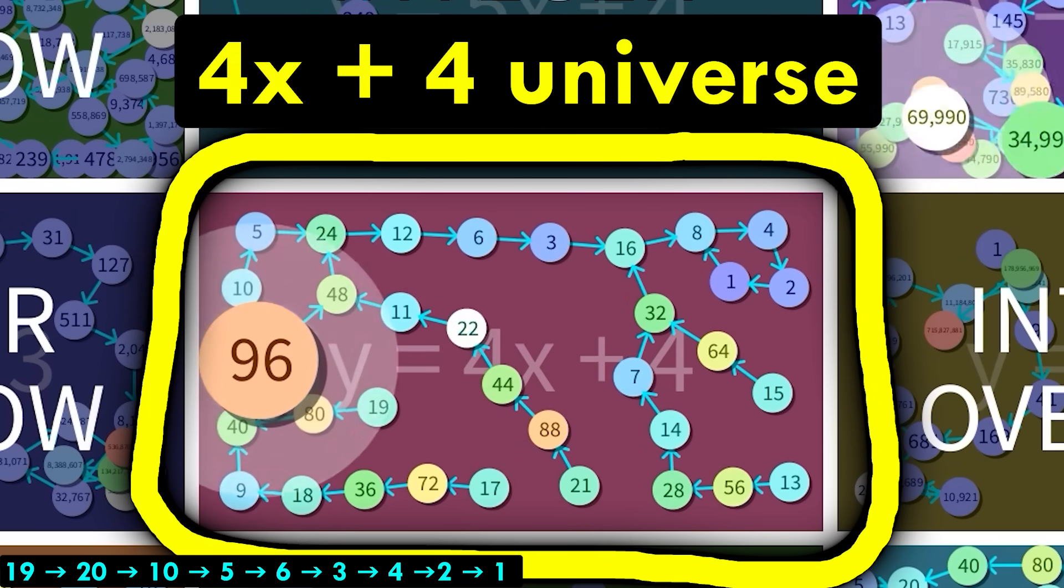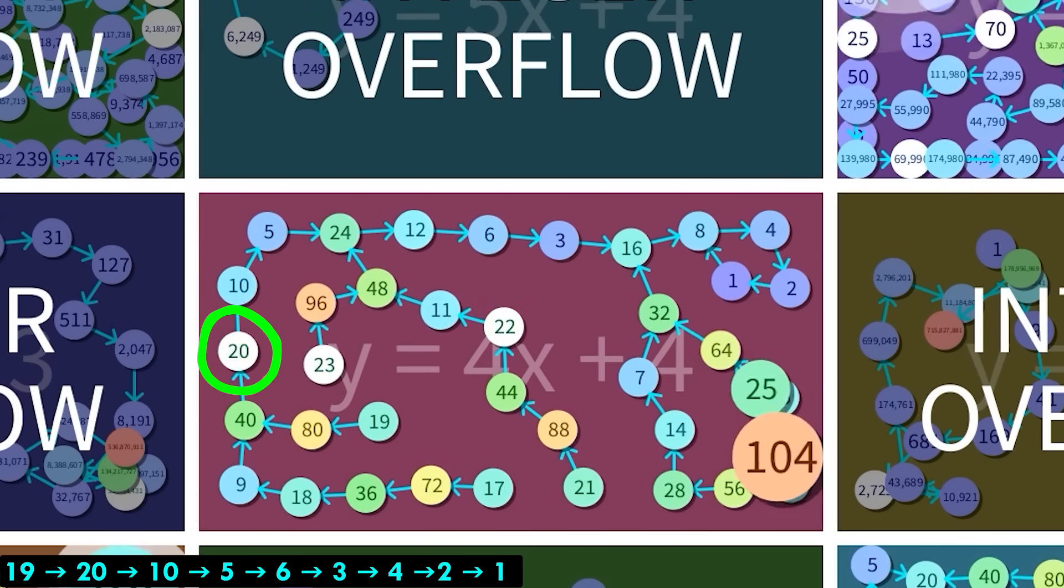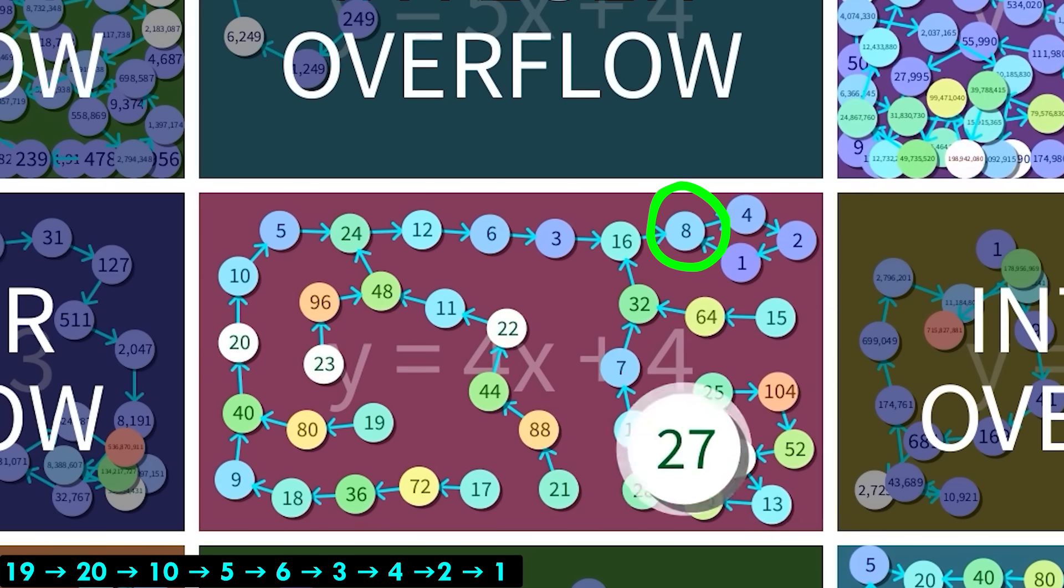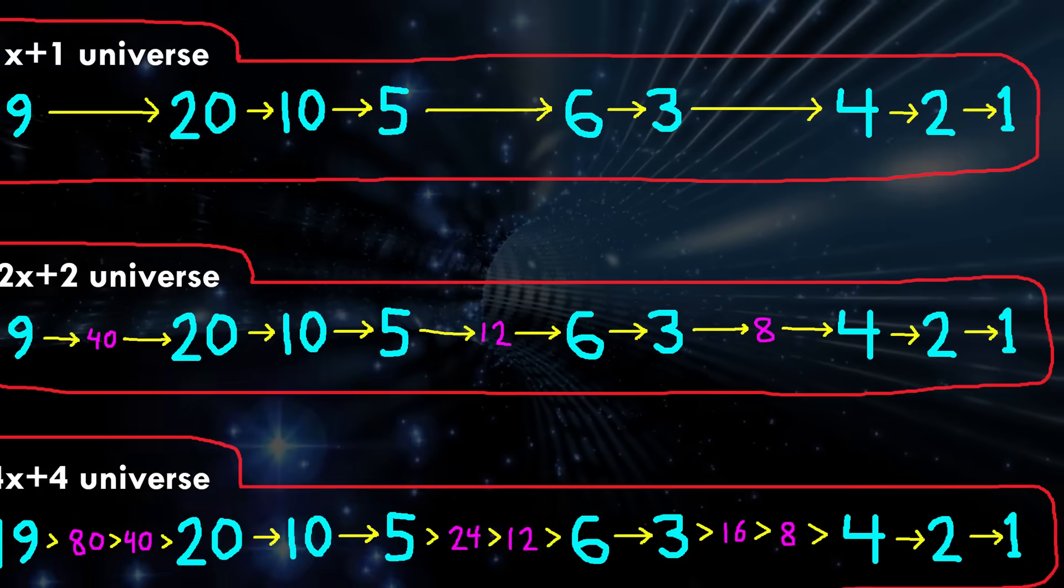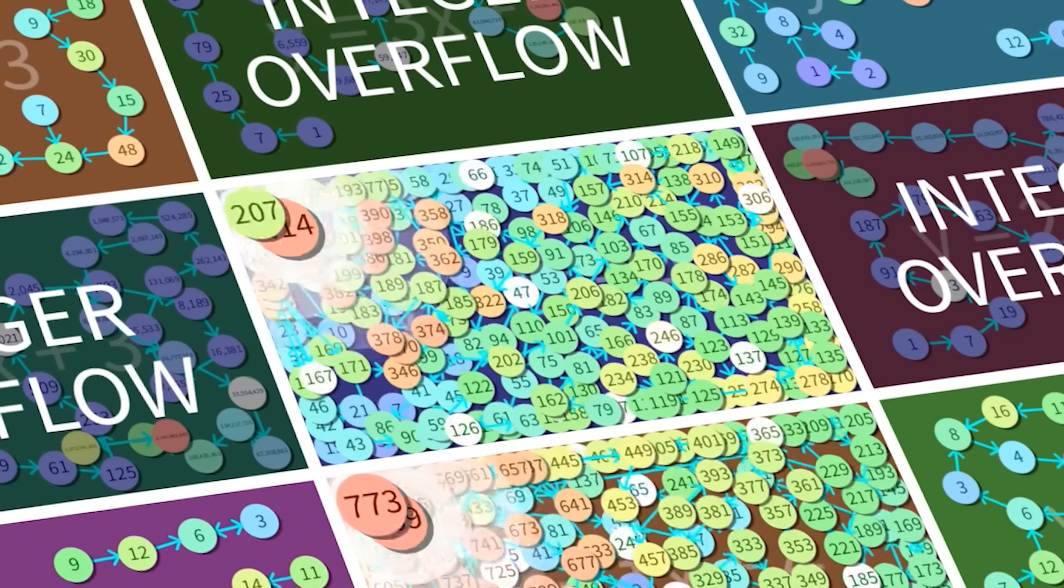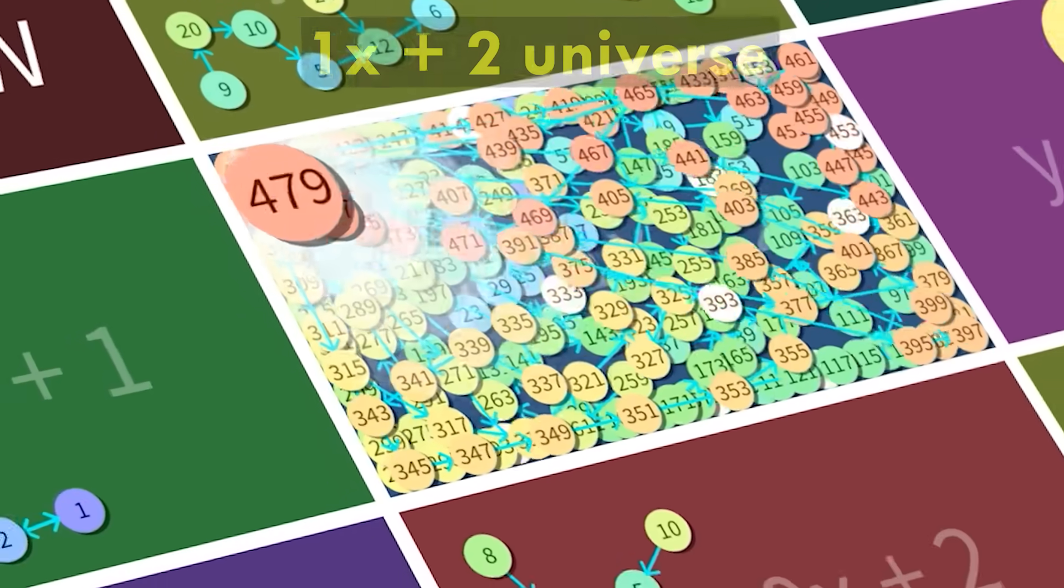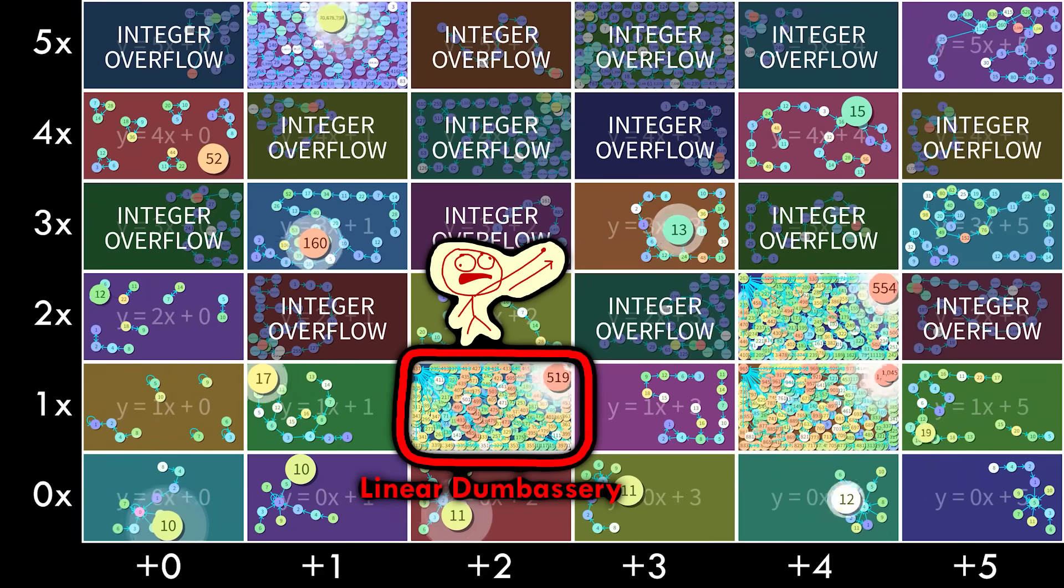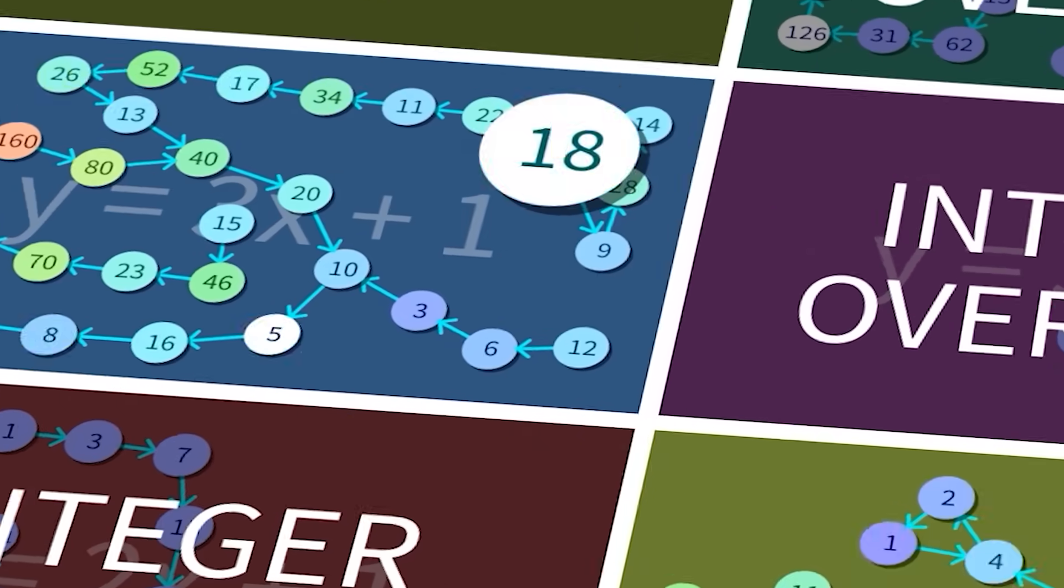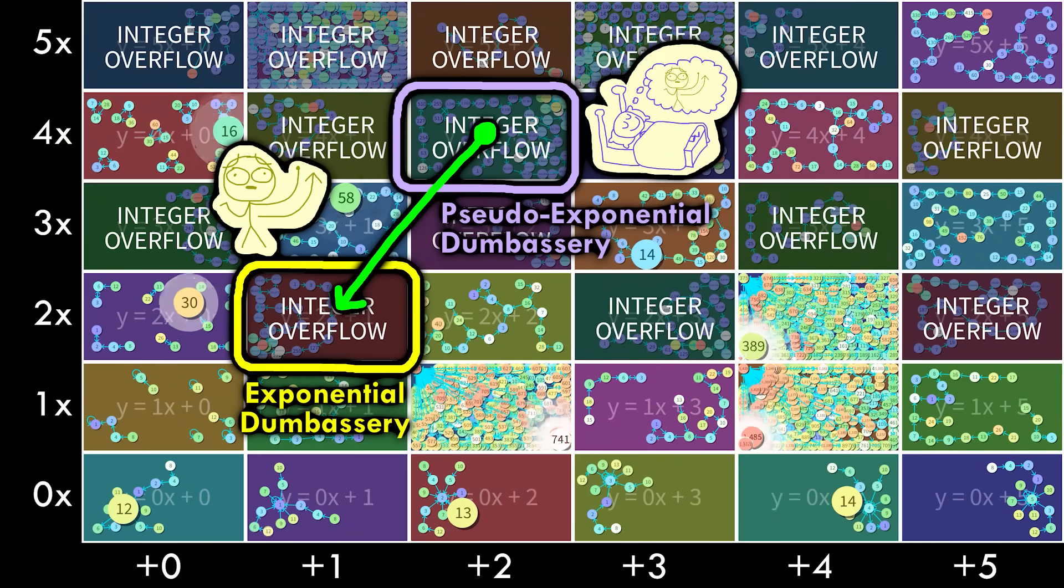And in the 4x plus 4 universe, the quadruple of before, 19 now follows the path, ignore 80, ignore 40, 20, 10, 5, ignore 24, ignore 12, 6, 3, ignore 16, ignore 8, 4, 2, 1. It's all the same path, just less efficient. So that's why I call these parallel universes. This also explains why the 2x plus 4 universe behaves just like the 1x plus 2 universe, giving us linear damasery and pseudo-linear damasery, and why the 4x plus 2 universe behaves just like the 2x plus 1 universe, giving us exponential damasery and pseudo-exponential damasery.